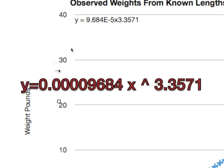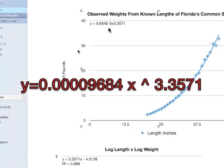The power function is up here. The coefficient is 9.68 times 10 to the negative 5, x to the 3.3571 power. So the notation here is pretty sloppy, but that's the power function.